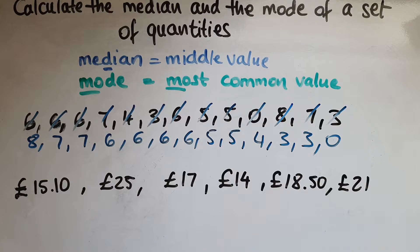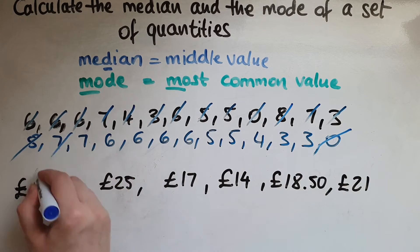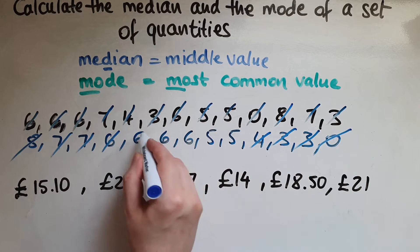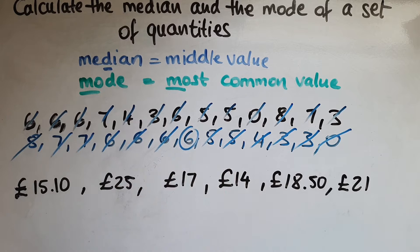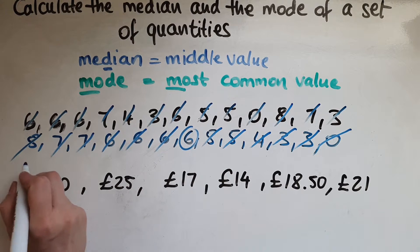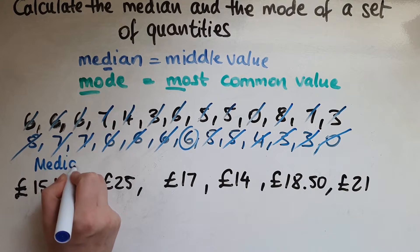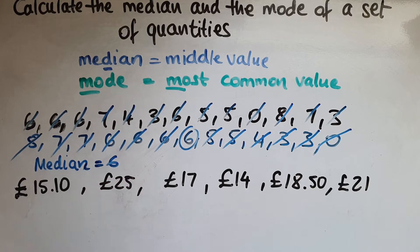So these are in order. Let's find the middle value, the one that sits right in the middle. So crossing out both sides, one each side. And I can see there is a 6. So this means that the median for this set of values is equal to 6.